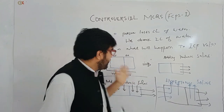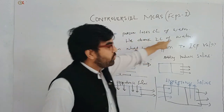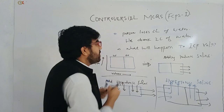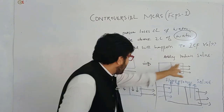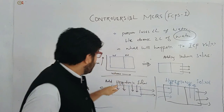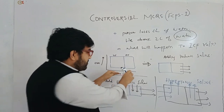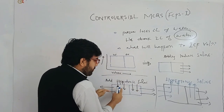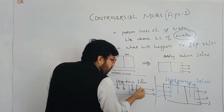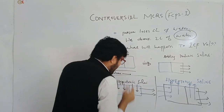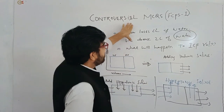Now back to the actual MCQ: a person loses two liters of water and drinks two liters of water. Water is hypotonic. So applying the hypotonic scenario: it will decrease the osmolality of extracellular and intracellular fluid, and it will increase the volume of both the extracellular and intracellular fluid compartments.